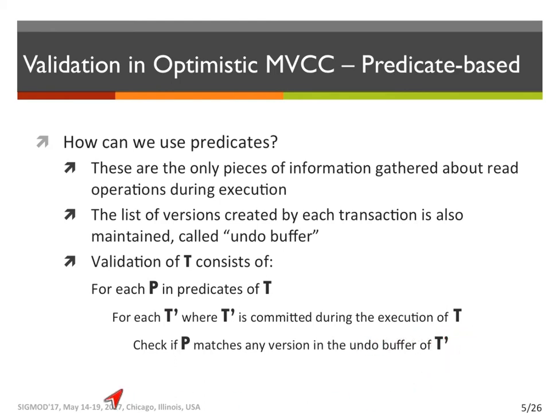If no match is found, it means that T read the most recent data and is good to go and commit. Otherwise, if a match is found, it means that T should have read that committed version and instead read the stale version. Therefore, it fails validation.